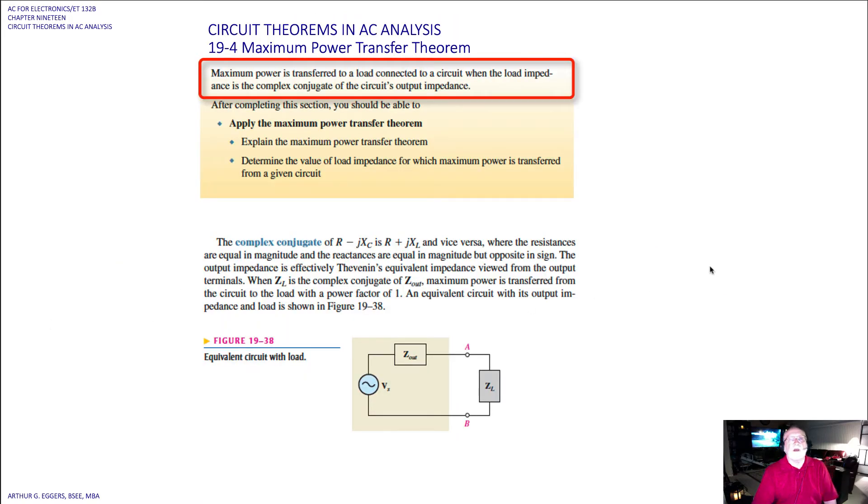Lastly, we look at the maximum power transfer theorem. Maximum power transfer to the load connected to a circuit occurs when the load impedance is the complex conjugate of the circuit's output impedance. We saw this before in ET 111, where we talked about changing the sign of the reactive value and it becoming the complex conjugate.